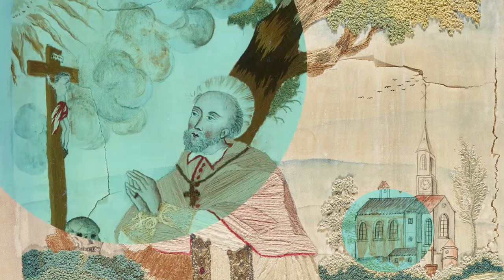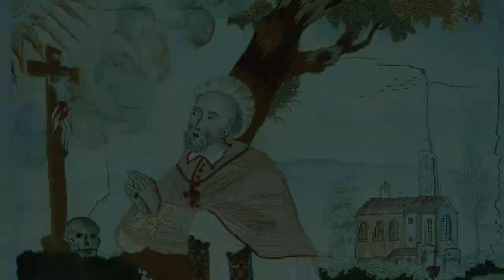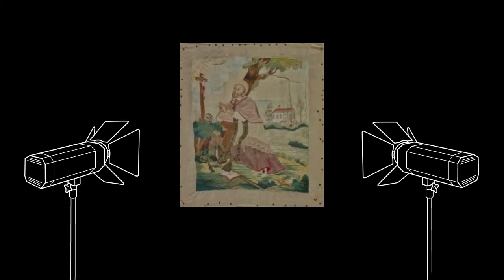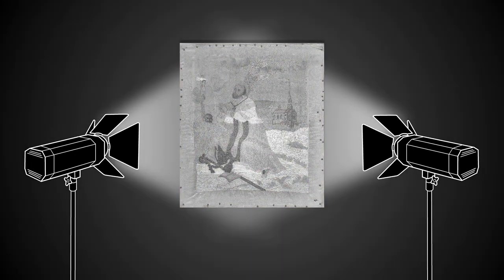Here we can tell that a substance has been applied over the church and clouds because the substance fluoresces orange under UV radiation.